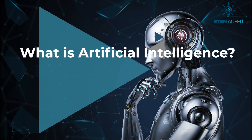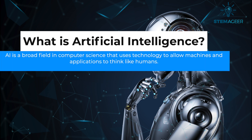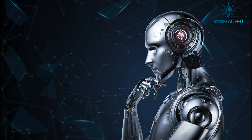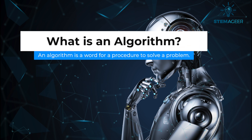Now back to today's topic. So what is artificial intelligence, or AI? Over the years there have been many ways that scientists and organizations have defined AI, because this technology is constantly growing and evolving. For the purposes of this video, we'll define AI as a broad field in computer science that uses technology to allow machines and applications to think like humans and perform tasks like learning, reasoning, making decisions, and solving problems. AI is basically a technology and a mathematical algorithm that makes machines smart. An algorithm is a fancy word for a procedure to solve a problem — in computer science, it's a set of steps that a computer program follows to complete a task.